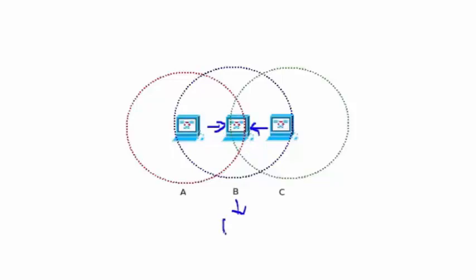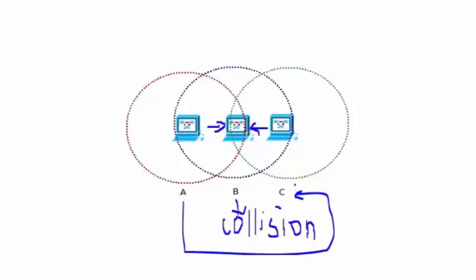This is known as hidden terminal problem, in which there are two access points which are not in each other's range and want to send data to an access point which is common to both transmission ranges. And both send data simultaneously which will result in a collision at the receiver access point. In this, access point A is hidden for access point C and vice versa. It leads to more collisions and wastage of resources.